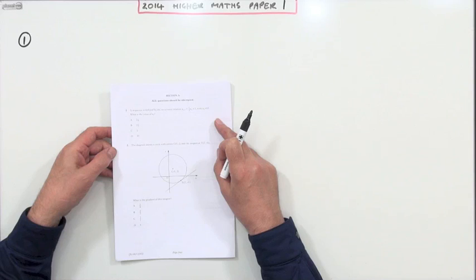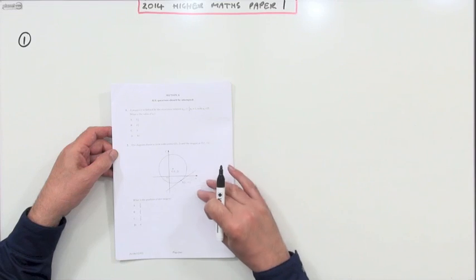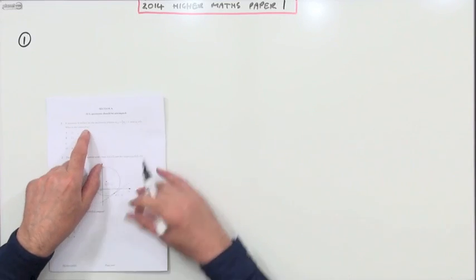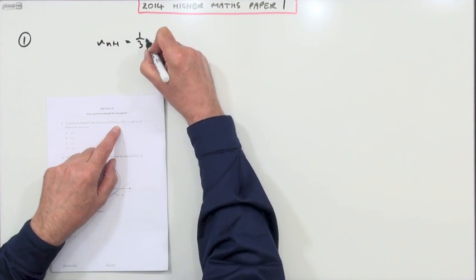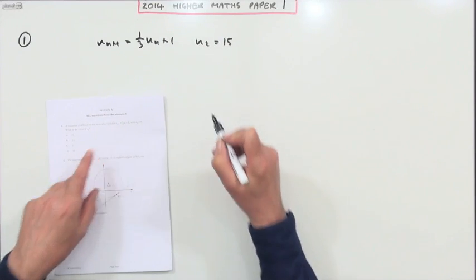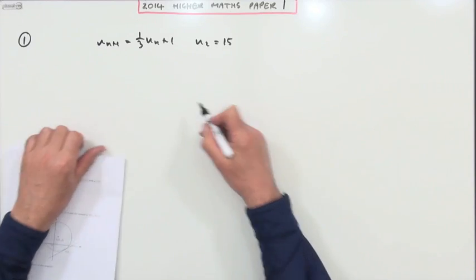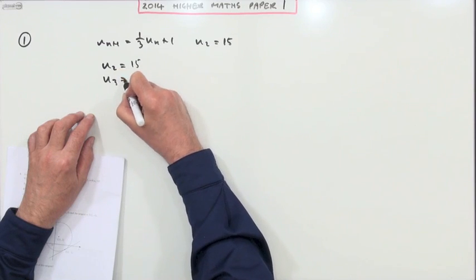2014 Higher Math Paper 1, the multiple choice objective questions, numbers 1 to 4. Number 1: a sequence is defined by this recurrence relation un+1 equals a third un plus 1, and it gives you u2. It asks what's u4, so you just work your way up to it. If u2 is 15, then the following term n going to n+1 will be a third of that plus 1.